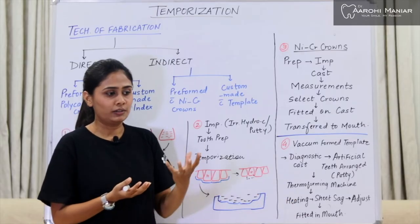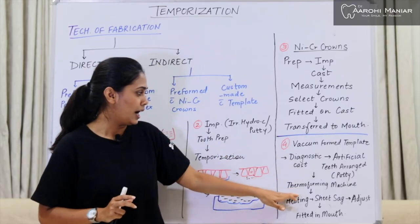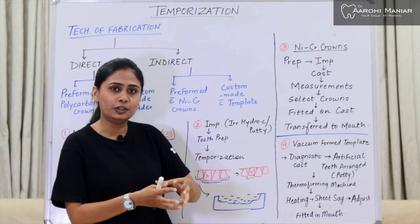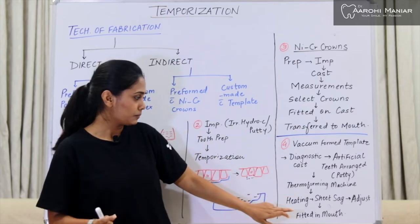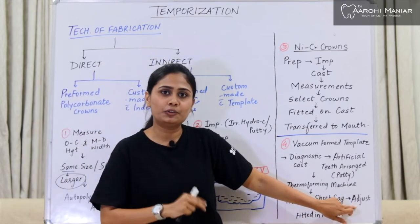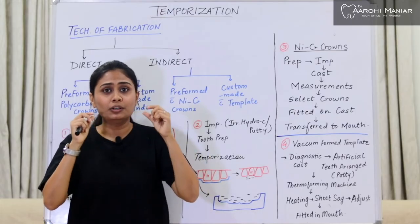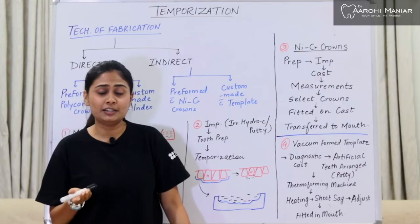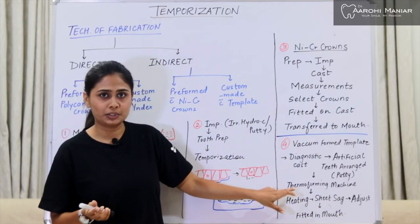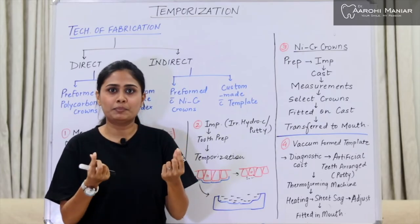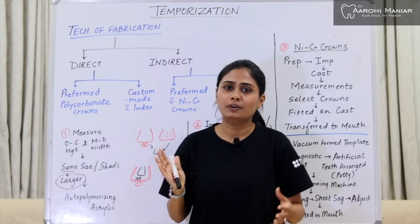The thermoforming machine works by placing a transparent sheet over the cast with the arranged teeth and starting the machine to produce vacuum. The vacuum causes the sheet to sag and take up the shape of the teeth. This is exactly like the transparent retainers given after orthodontic treatment, or aligners like Invisalign, which are very popular. The same process occurs in the thermoforming machine — a transparent template-like structure is formed and fitted into the patient's mouth. This is the vacuum formed template, and that covers all of our temporization techniques.